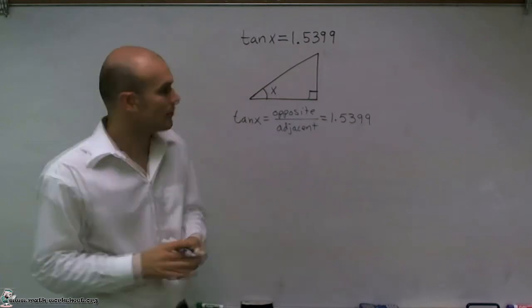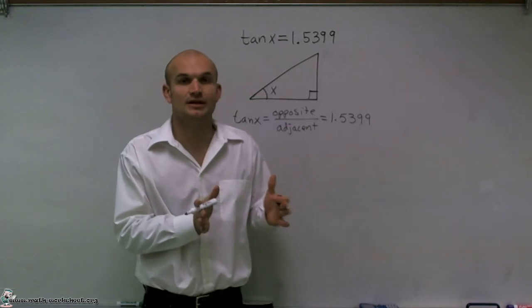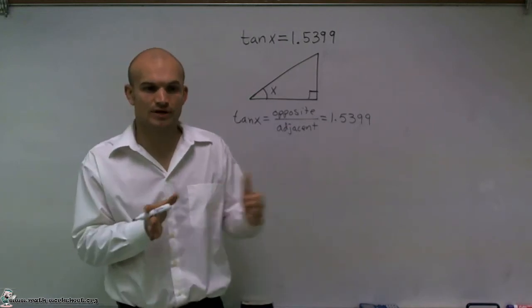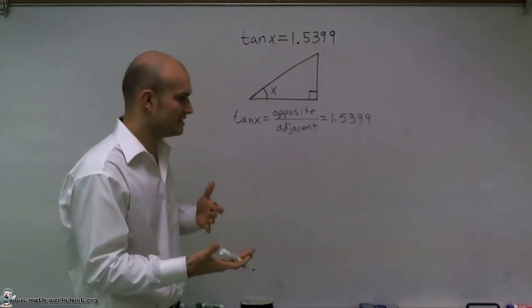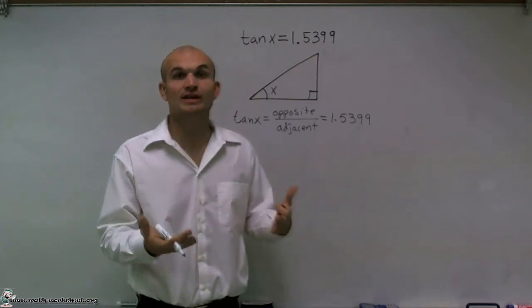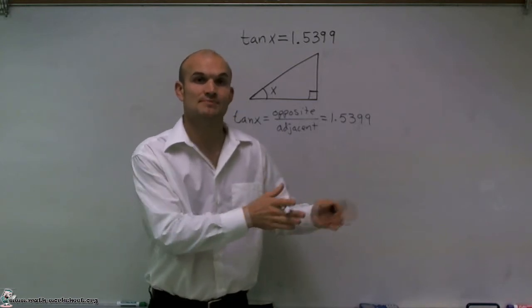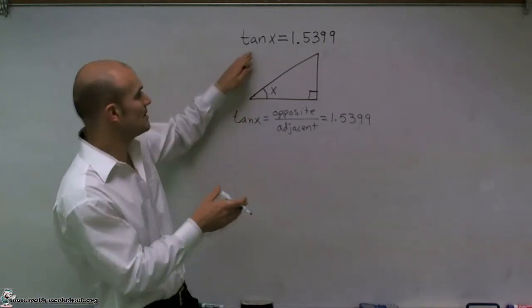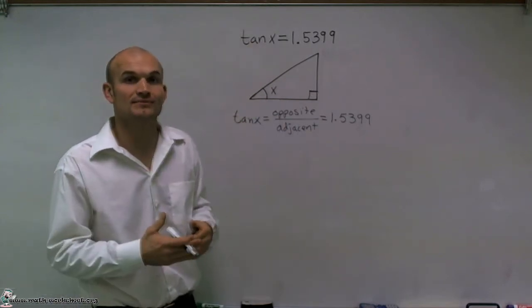So therefore, what we have is we have a function tangent. And what we're going to want to do is we're going to have to undo that function. Now, if you think of undoing, we think of our inverse functions. If I have x plus 1, the inverse of that would be x minus 1. So if I'm looking for what is the opposite of tangent, well, that's what we're just going to call the inverse tangent.